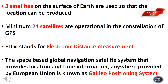Three satellites on the surface of the earth are used so that a location can be determined. The minimum number of operational satellites in the constellation of GPS is 24. EDM stands for Electronic Distance Measurement. The space-based global navigation satellite system provided by the European Union is known as the Galileo positioning system.